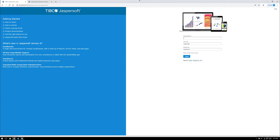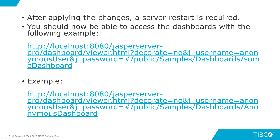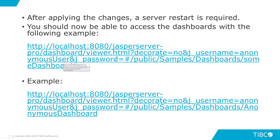Here's an example of the link we're going to use. Mine's on localhost. It's a dashboard viewer URL. You have to make sure you use decorate=no, followed by j_username=anonymousUser and j_password=## — that's essentially the password for the anonymous user. Then you add the link to the dashboard you're using. Let's go back to our environment, select a dashboard, and go from there.